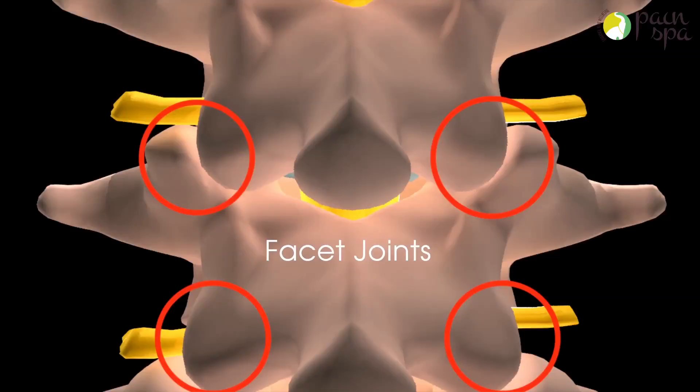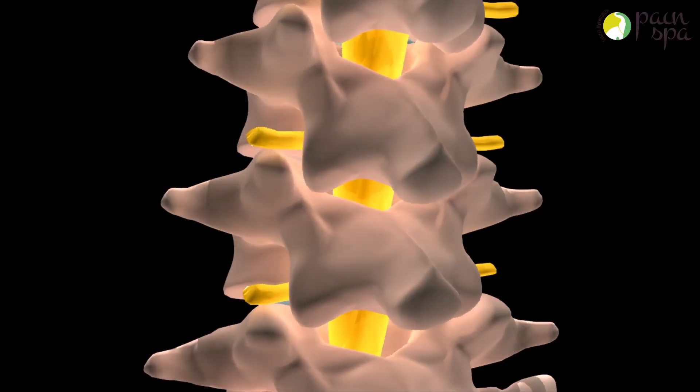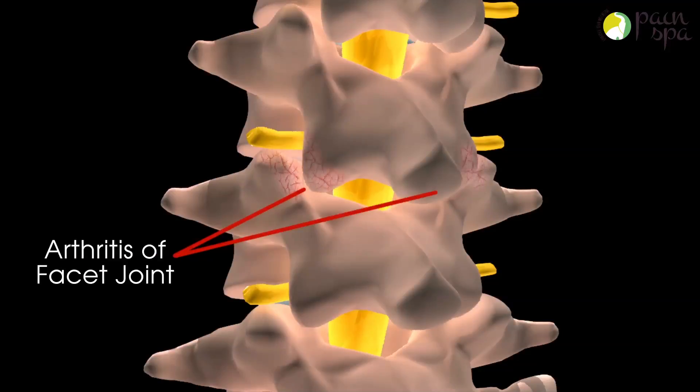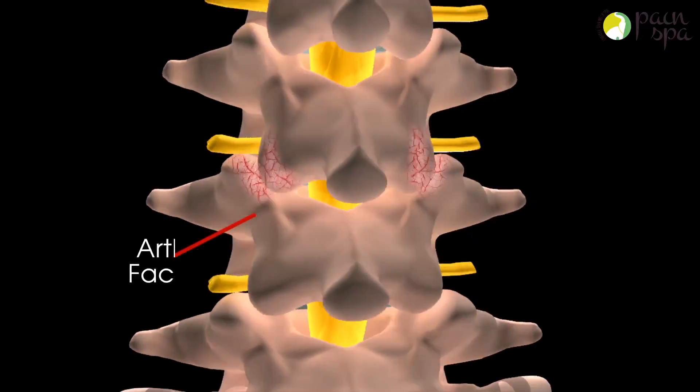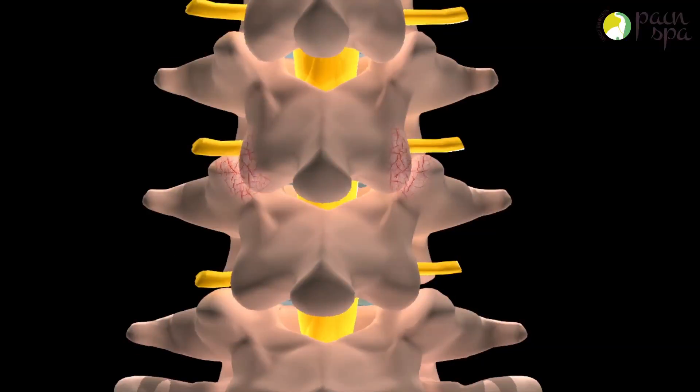Facet joints are little joints situated throughout the spinal column. They can be a common source of back pain. A facet joint injection can be helpful in diagnosing and alleviating back pain associated with facet joints.